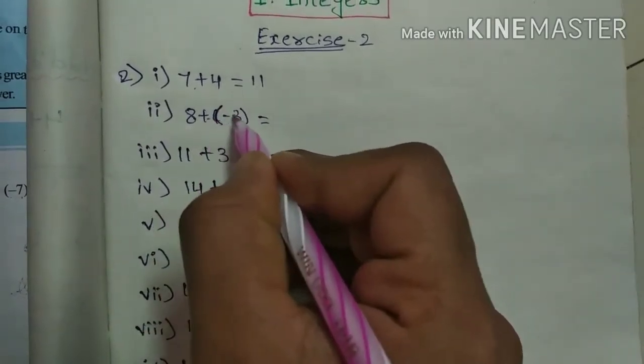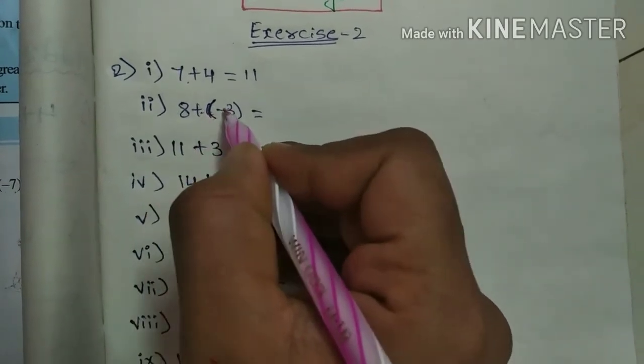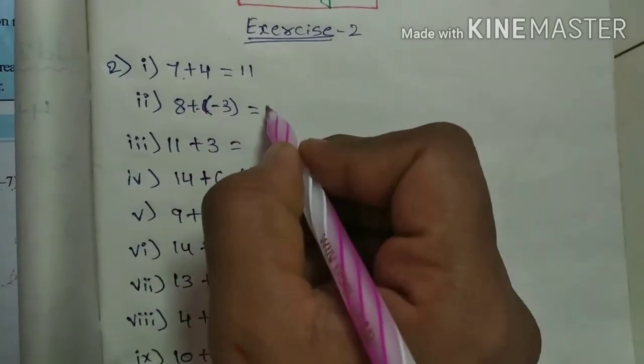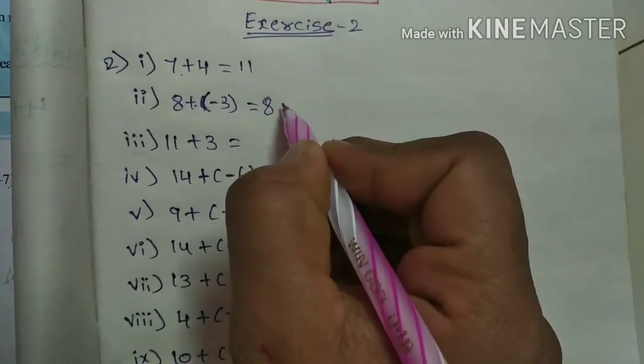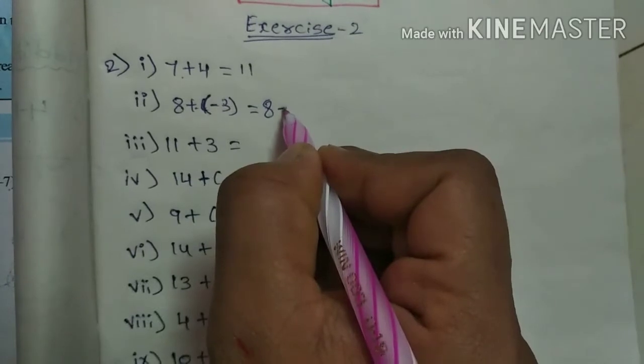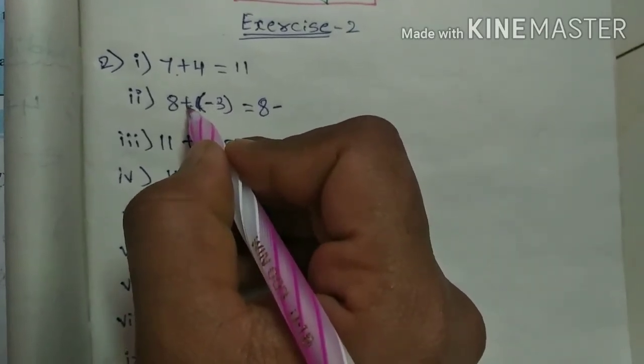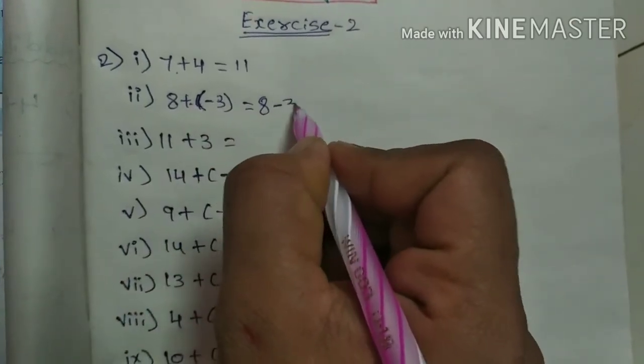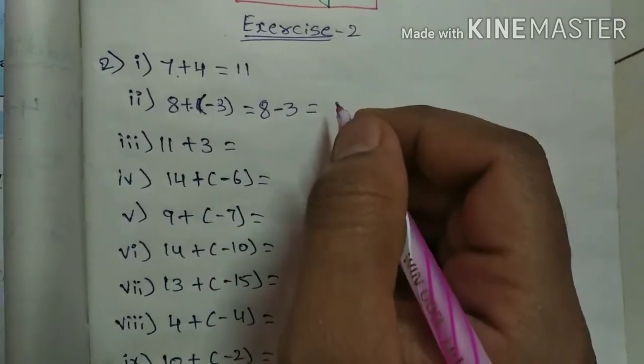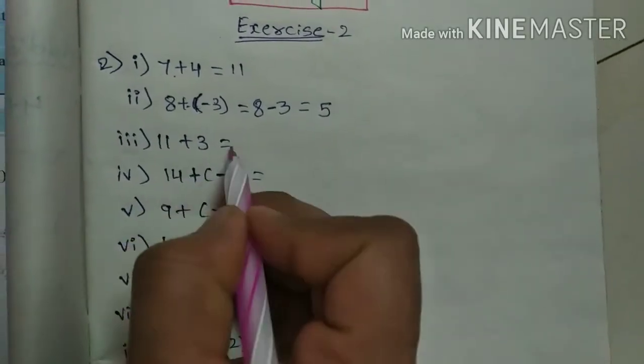Bracket is nothing but multiplication. So plus into minus equals minus. 8, write as it is, and plus into minus is minus. Don't write two symbols, okay? Multiply here: plus into minus, minus 3. So 8 minus 3 is 5.